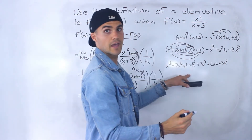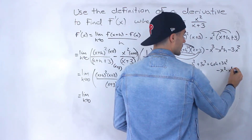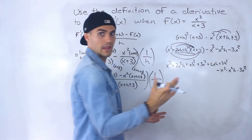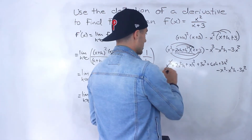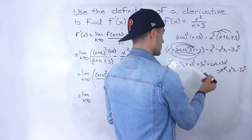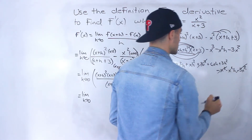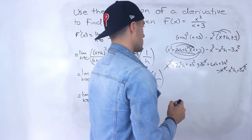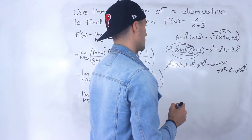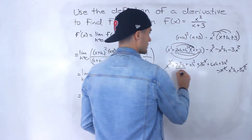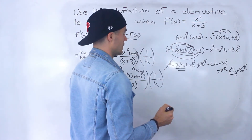When I FOIL this out, that's what I end up getting. And then we're still going to have all of this minus x cubed minus x squared h minus 3x squared. Now a bunch of stuff should cancel out. Notice that x cubed and x cubed cancel out, and 3x squared minus 3x squared cancels out. And then it doesn't seem like anything else will cancel.